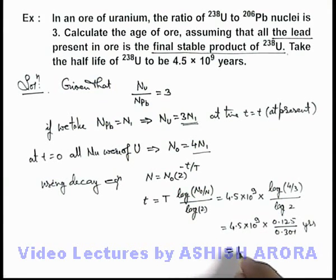On simplifying, we are getting the age of ore is 1.87 × 10^9 years. This will be the answer to this problem.